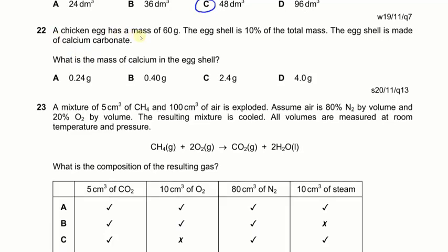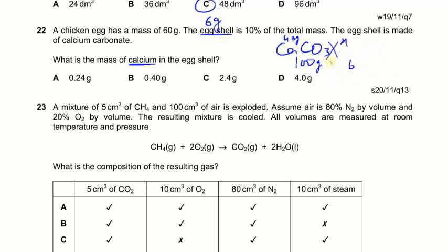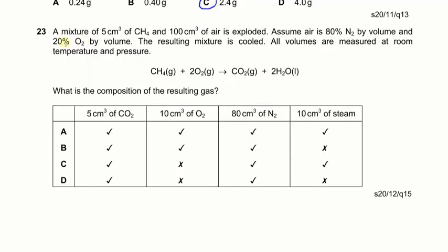Next: a chicken egg has a mass of 60 g. The egg shell is 10% of the total mass, so the shell is 6 g. The shell is made of calcium carbonate (CaCO₃). What is the mass of calcium in the egg shell? The formula mass of CaCO₃ is 100, of which 40 g is calcium. So 100 g of CaCO₃ contains 40 g of Ca. For 6 g: x = (6 × 40) ÷ 100 = 240 ÷ 100 = 2.4 g of calcium.